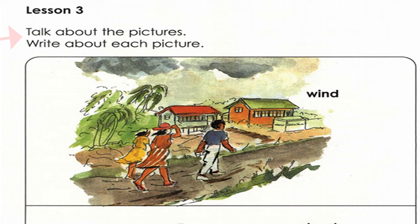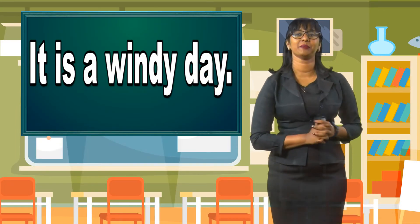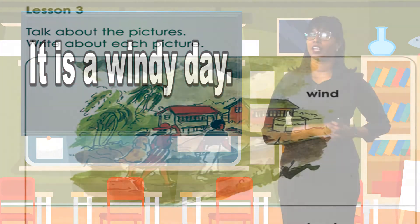Let us take a look at picture number one. In this picture, we can see that the trees are blowing from side to side. So therefore, it is a windy day. A windy day is when the wind is very strong and it can blow things around. The trees will be moving from side to side. If you're holding an umbrella, you are going to be struggling to keep it because it will be blowing away.